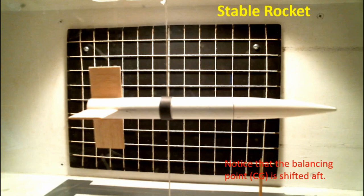Let's look at a second test. I've moved the center of gravity back, so now I've got about 1.5 calibers of stability. The rocket should still be stable but certainly not as stable as the first test. Let's run the test and see what happens.